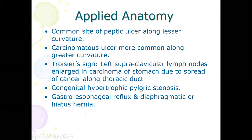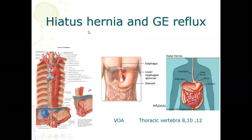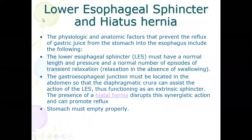Another important condition is congenital hypertrophic pyloric stenosis. There is also cholecystitis or biliary reflux and diaphragmatic hiatus hernia — these parts you can read on your own. You can see here how a hiatus hernia occurs, involving the lower esophageal sphincter.